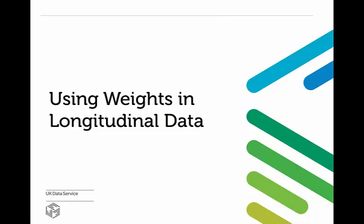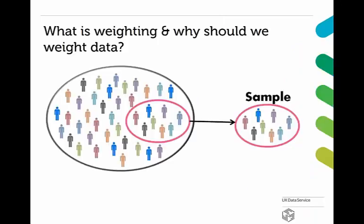In this short video, we'll be looking at a really important aspect of working with longitudinal data: using weights. Survey datasets contain information about a sample taken from a population, but what we really want to do is to use that sample to say something about that population. Data producers calculate weights to make the data more representative of the population it's designed to reflect. A weighting variable assigns a value to each observation in the data to indicate how much they should be represented in the analysis. These weights are an important part of ensuring our analyses represent the population that we're interested in.